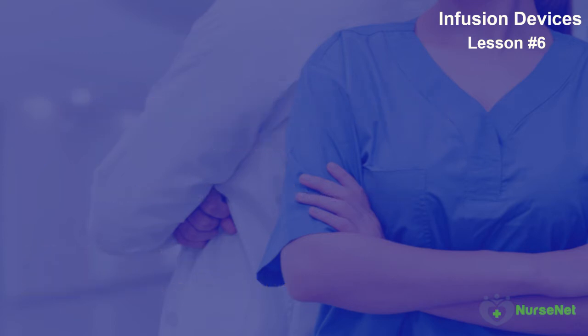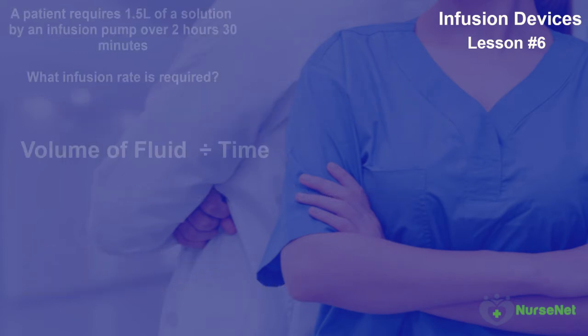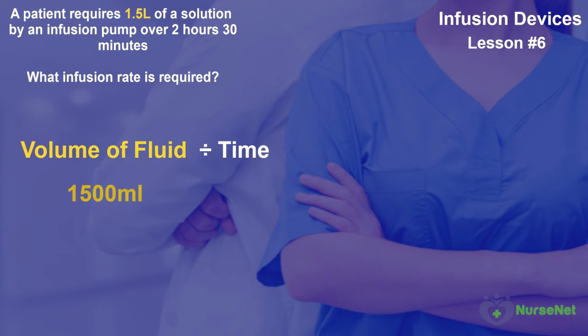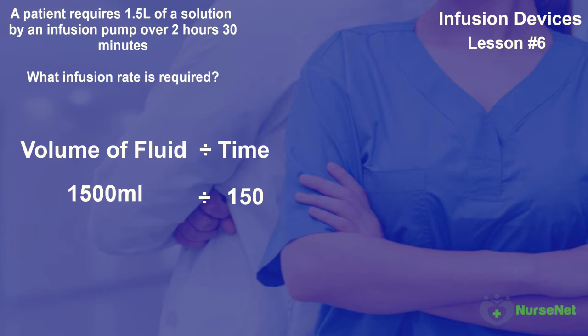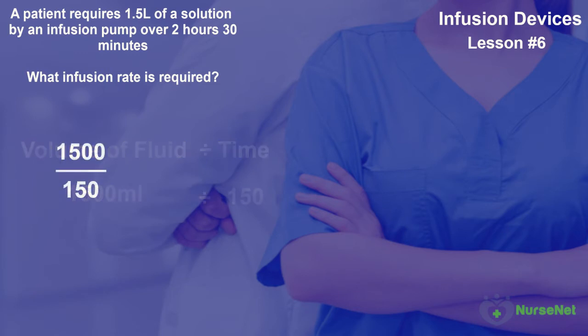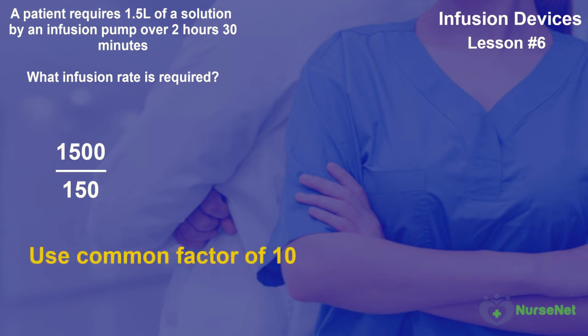Now we can input this into our formula. The volume of fluid is 1,500 millilitres divided by the time of 150 minutes. Working on the basis that you'll be sitting your drugs calculation test without the use of a calculator, we need to think back to the foundation of maths element of this course and utilise our fractions knowledge. So let's start with 1,500 over 150. Using a common factor of 10, we can reduce this fraction down.